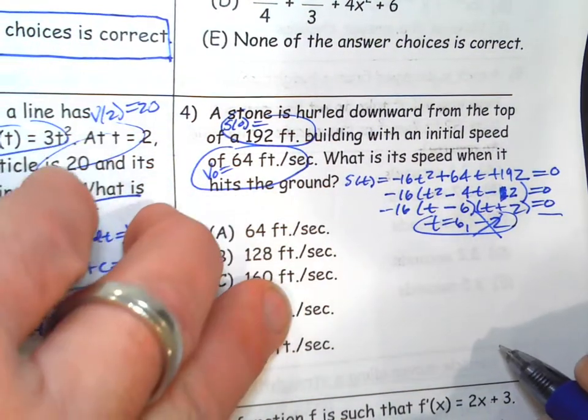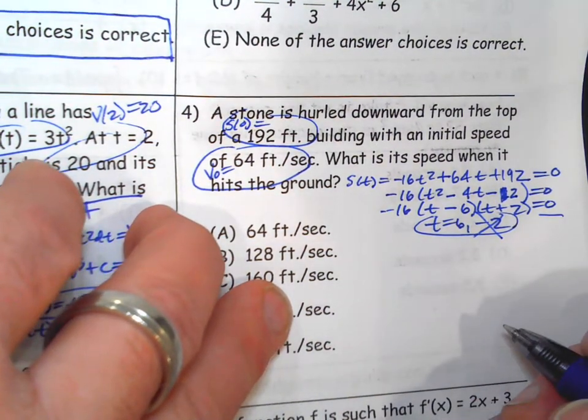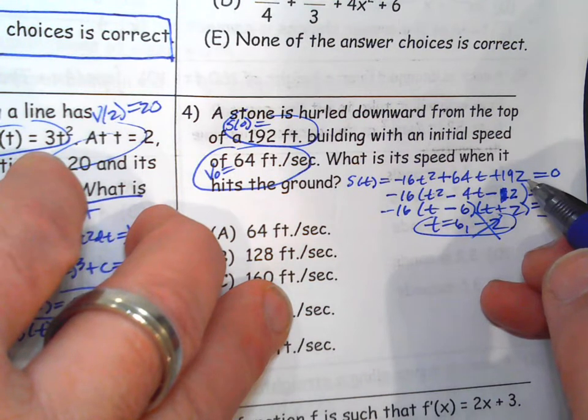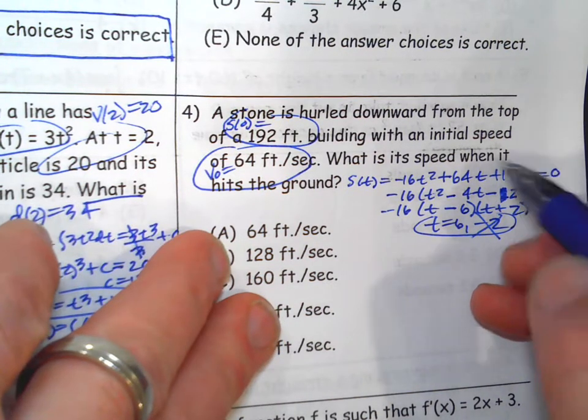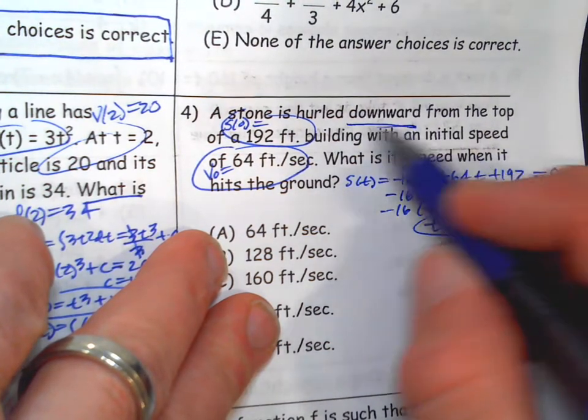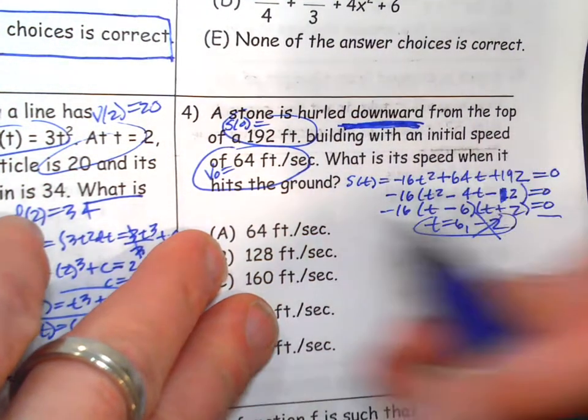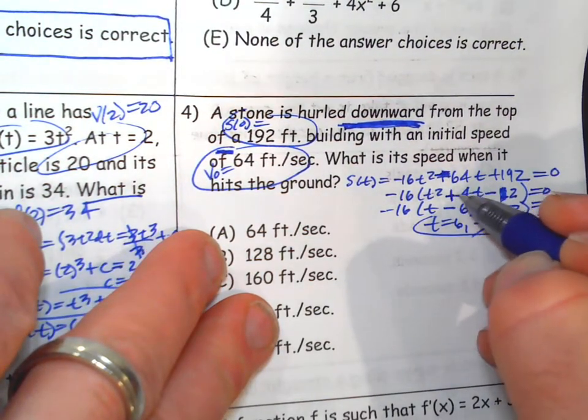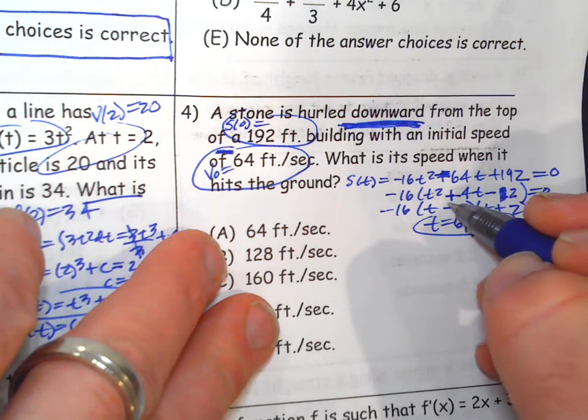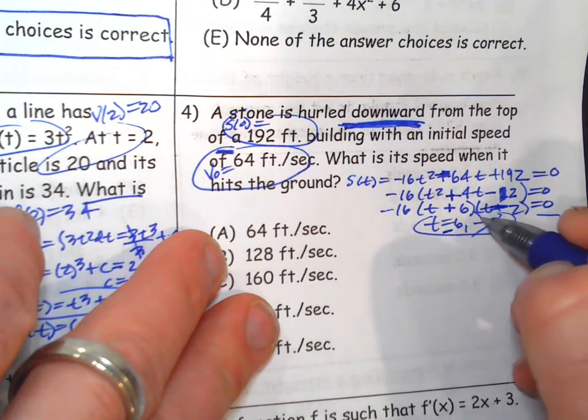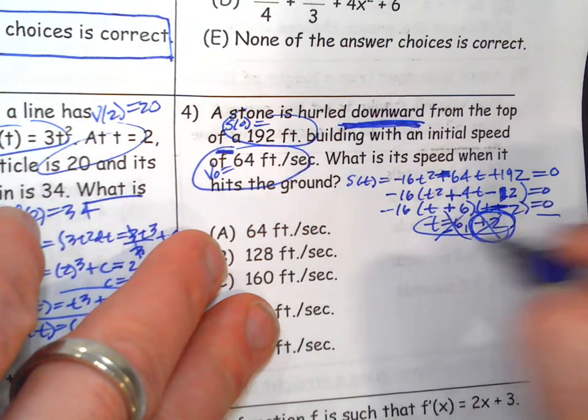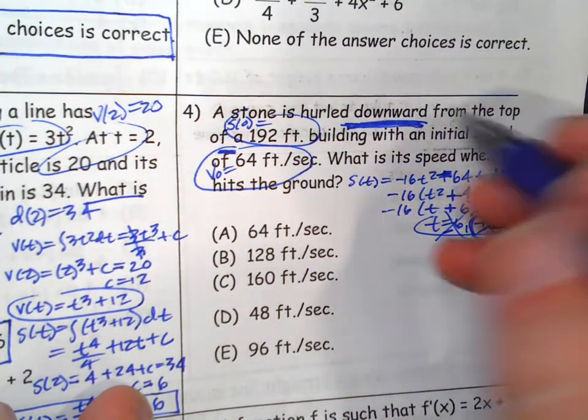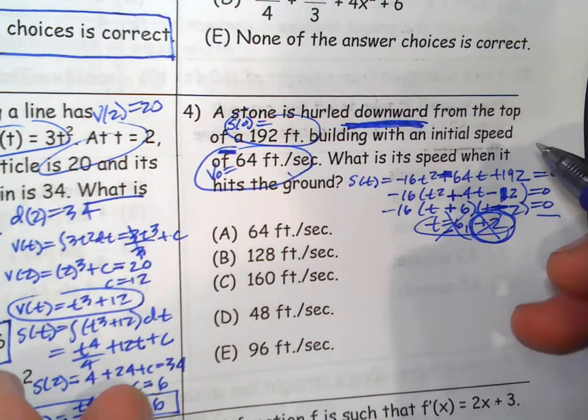T equals 6, t equals negative 2. So time and factor, I'm not going to do negative time. So the time is, let's make sure I did this right. Down, oops, hold on. It's hurled downward. So the initial velocity has to have a negative. So that's going to be plus. So this is going to be plus, this is going to be negative. So it's going to be negative 6, positive 2. That's the one we want. Yeah, downward direction, negative. They give you magnitude there. Okay.